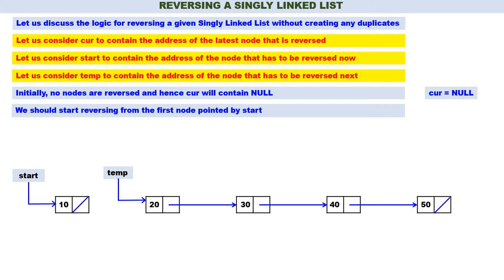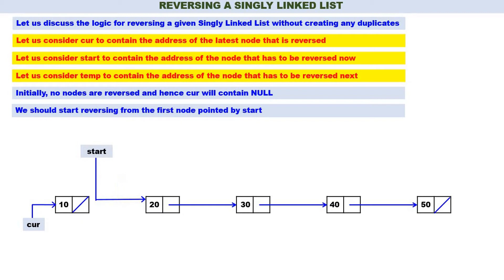Now, the latest node that is reversed is 10. Therefore curr will contain the address of node 10, because curr always contains the address of the most recently reversed node. Which node do we have to reverse now? 20. Therefore start will contain the address of node 20. Which node has to be reversed next? 30. Therefore temp will contain the address of node 30.